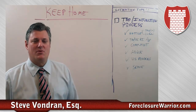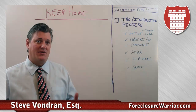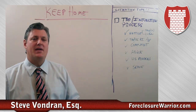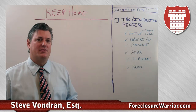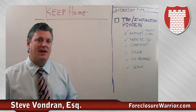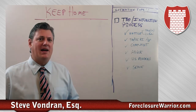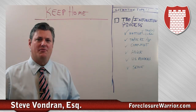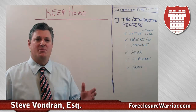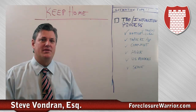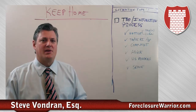Attorney Steve Vondren, Foreclosure Warrior. One thing I left out on the retainers we were talking about — I just want to make sure I get that in here — is typically the other thing I would do in a retainer agreement is to add a successful litigation fee, a flat dollar amount, $5,000, $10,000, whatever the case may be, in the event you bring home a successful conclusion to the case.